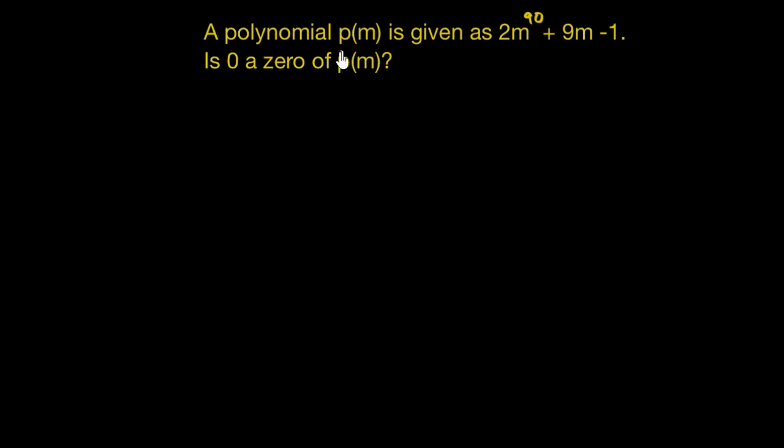A polynomial p(m) is given as 2 times m to the power 90 plus 9m minus 1. Is 0 a zero of p(m)?